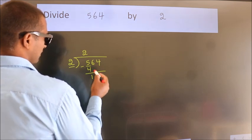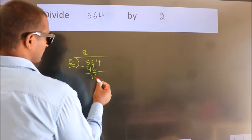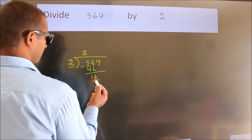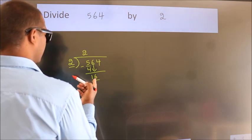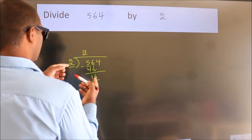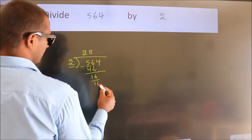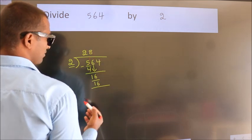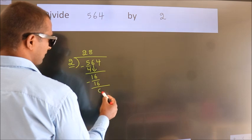After this, bring down the beside number. So 6 down. So 16. When do we get 16? In 2 table. 2 times 8, 16. Now we subtract. We get 0.